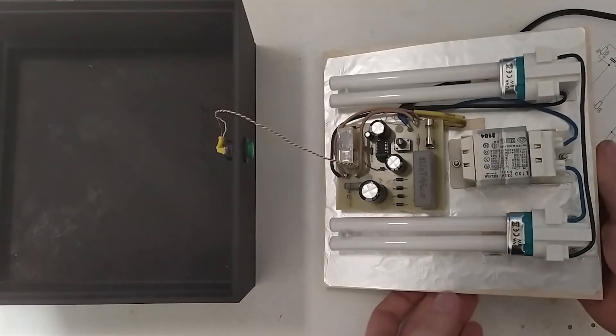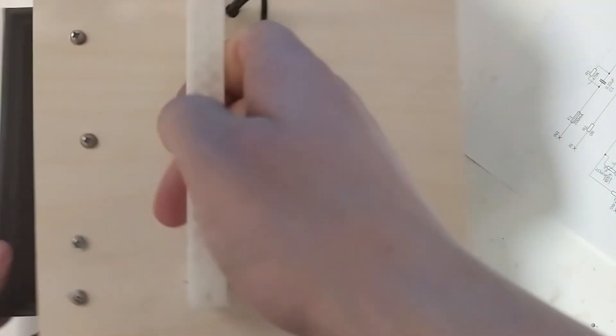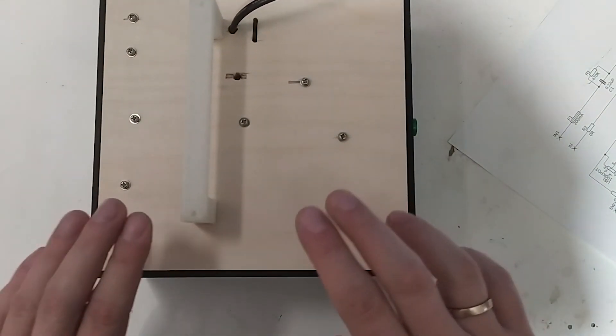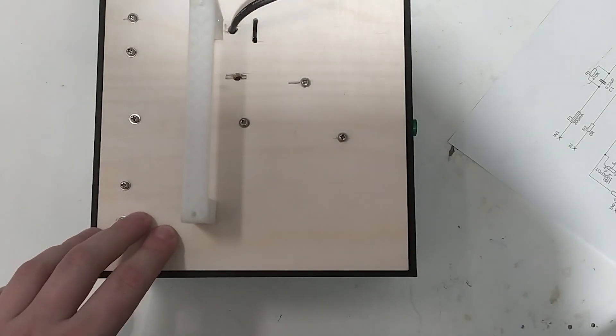So yeah, this is the whole thing, and in the next episode we will use this and the spin coater to make us some double-sided circuit boards. I will see you on the next one.